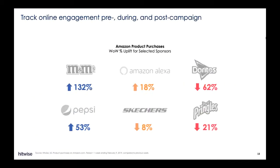Most importantly, Super Bowl sponsors want to measure the lift in sales and conversions as a result of their campaign. By tracking purchases online before, during, and after the campaign, brands can assess the success of their sponsorship. For M&Ms and Pepsi, the campaign led to meaningful lifts in sales on Amazon after their campaigns. But for brands like Doritos and Pringles, they might want to leverage these findings to inform their future partnerships to improve.